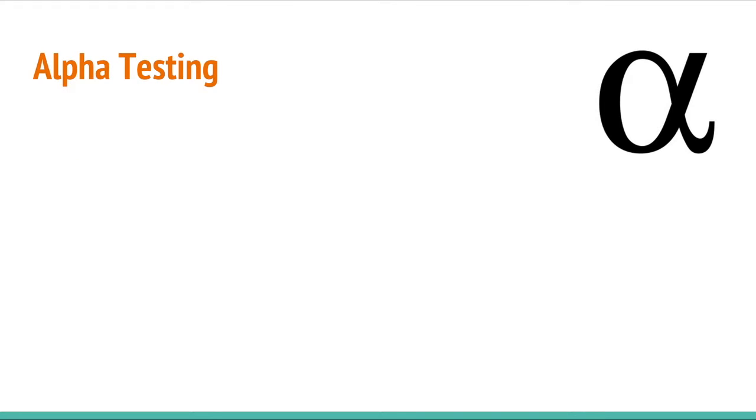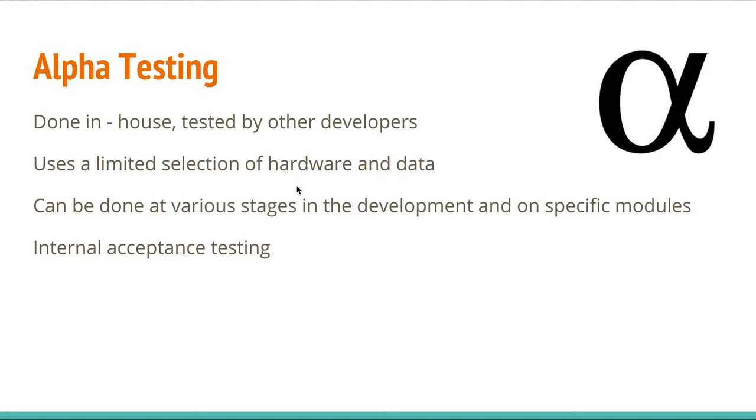Alpha testing. It's done in-house, so in the company, by other developers of that company. But it uses a limited selection of hardware and data, so limited by the hardware and data of the company. And it can be done at various stages in development and on specific modules. And it's usually referred to as internal acceptance testing. It's a part of internal acceptance testing.